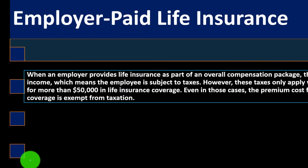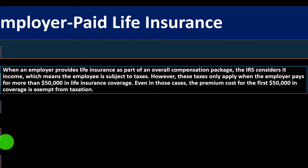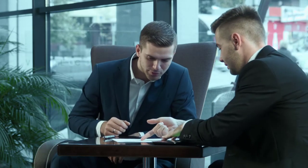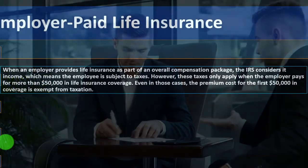Employer-paid life insurance: when an employer provides life insurance as part of an overall compensation package, the IRS considers it income. This makes sense because employer-provided benefits that aren't cash — like a car or insurance coverage — can still constitute income unless specifically exempted. The IRS considers it income, meaning the employee is subject to taxes. However, these taxes only apply when the employer pays more than $50,000 in life insurance coverage.